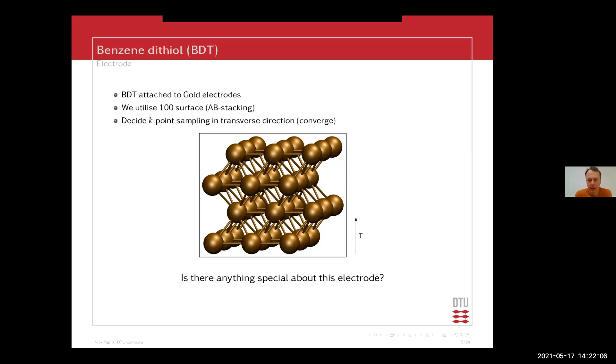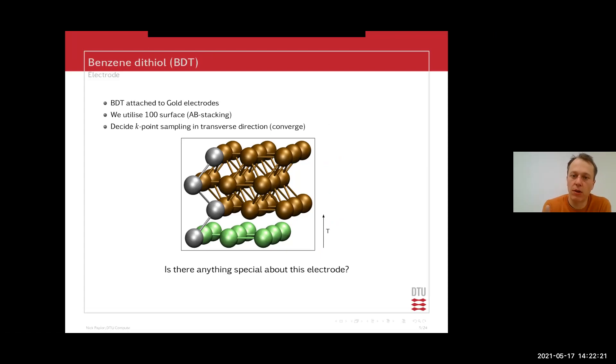And then there's a small hinted question. So is there anything special about this electrode? And yes, there is. In this case, this one has a periodicity along the transverse direction. So transport is in this case going up out of the screen, but the transverse direction is being into the screen and horizontally. There you have a periodicity in terms of block repetitions. So this is a three by three block repetition of this electrode.